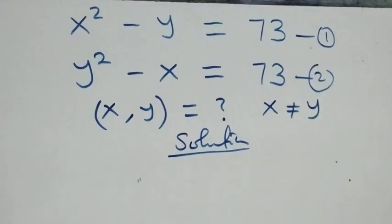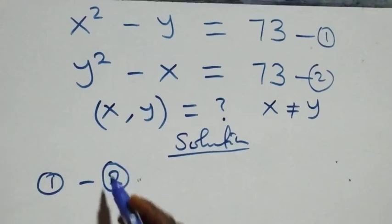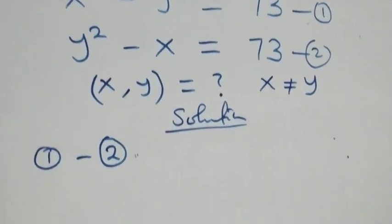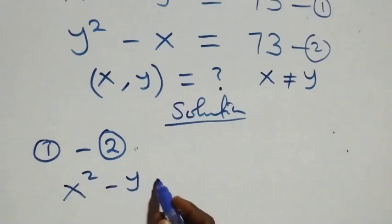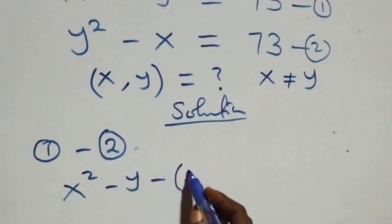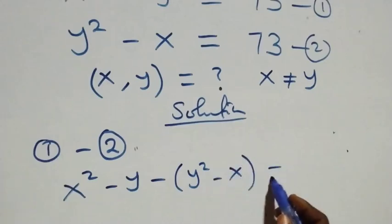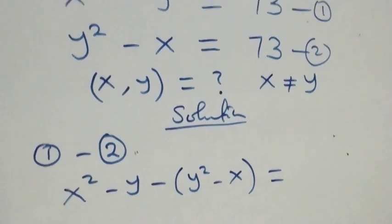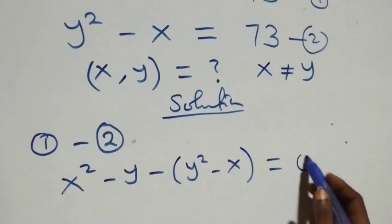In the first step, subtract equation two from equation one — that is, equation one minus equation two. From equation one the left-hand side is x² - y, and we subtract the left-hand side of equation two, which is y² - x. On the right-hand side we have 73 minus 73, which gives us zero.